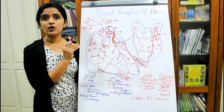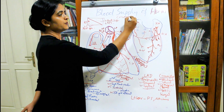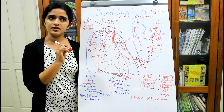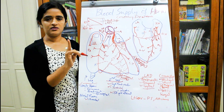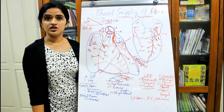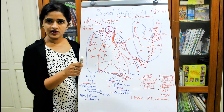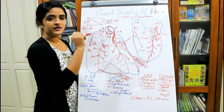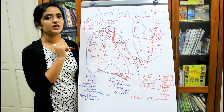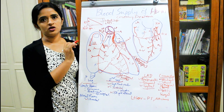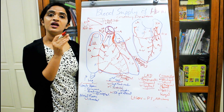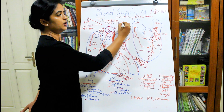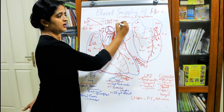Coronary dominance is a very favourite topic for examiners. It is decided by looking at one single artery — the posterior interventricular artery. If it is coming from the right coronary artery, you call it right dominance. If the posterior interventricular branch is coming from the left coronary artery, that person is said to have left coronary dominance. If posterior interventricular branches come from both right and left coronaries, that condition is known as co-dominance, and it is said to be a balanced type.